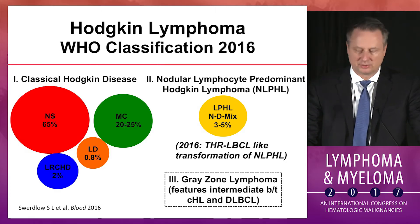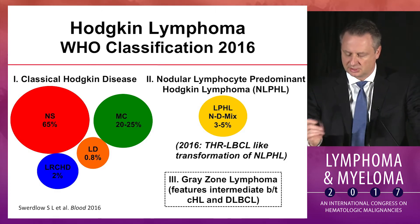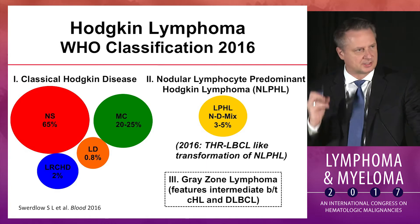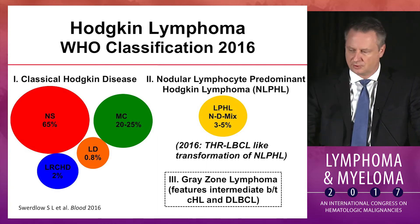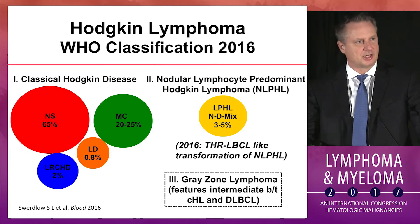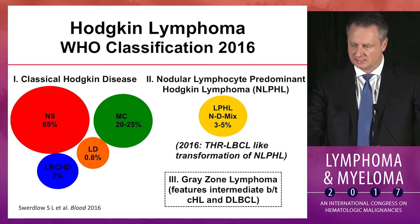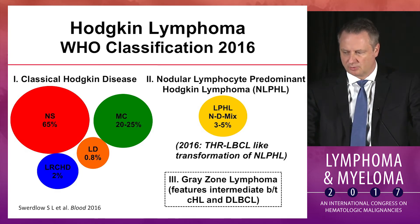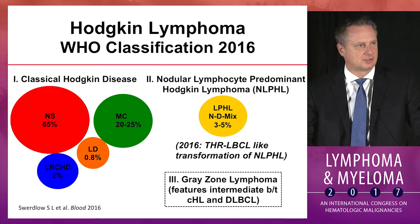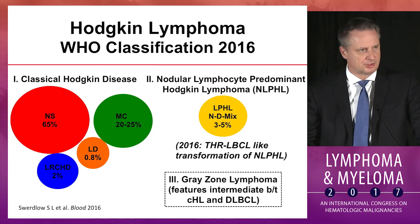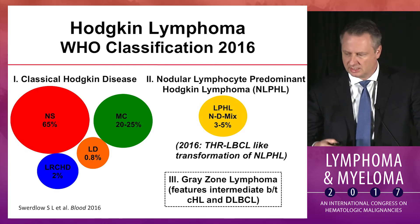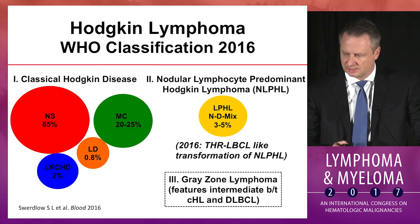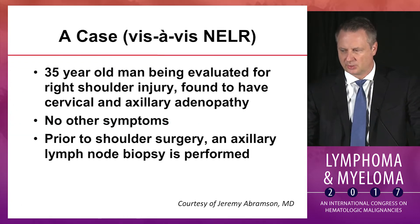There is arguably a third bucket. In the 2016 WHO classification there is now a category for T-cell histiocytic rich large cell lymphoma — transformation of nodular lymphocyte predominant — which we've known for many years can occur, and this is now an official name. The third bucket is gray zone lymphoma, mainly because it has features of both classical Hodgkin lymphoma and diffuse large B-cell lymphoma, although as we and others have published, it really should be viewed and treated more like diffuse large B-cell lymphoma.